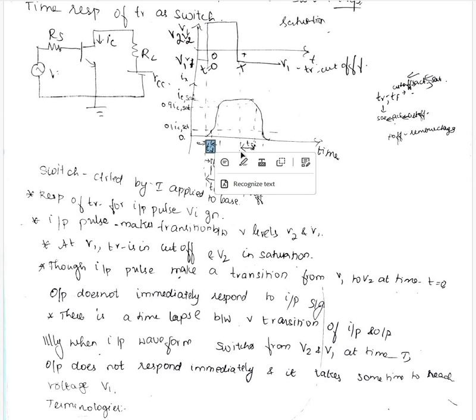Ts is the settling time where it has come to off state even then it is on for some time. From off state till 0.9 IC sat the time taken is the settling time, and from 0.9 IC sat to 0.1 IC sat the time taken is the fall time tf.